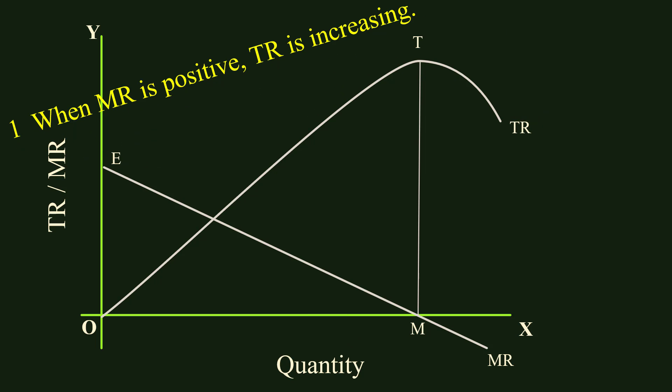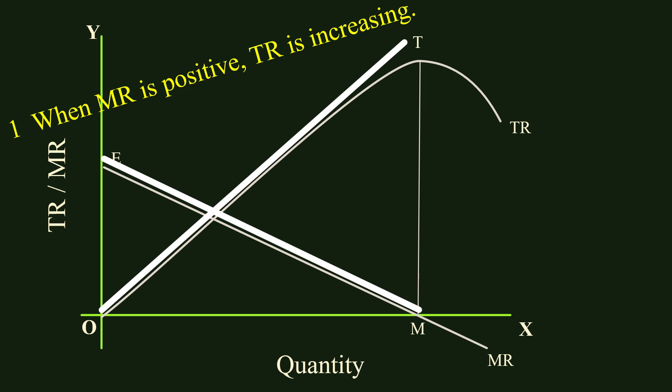First relation: when MR is positive, total revenue is increasing. In the segment EM of the MR curve, MR is positive. In the corresponding segment OT of the total revenue curve, total revenue is increasing.